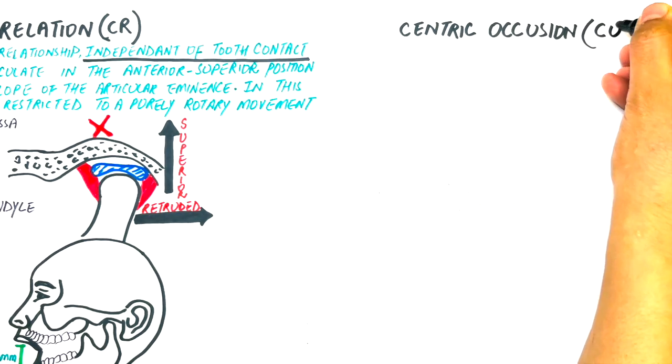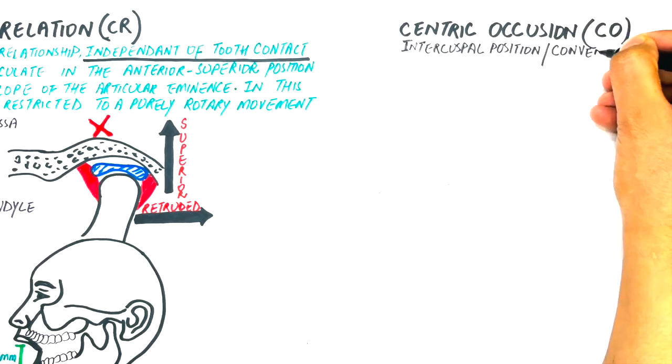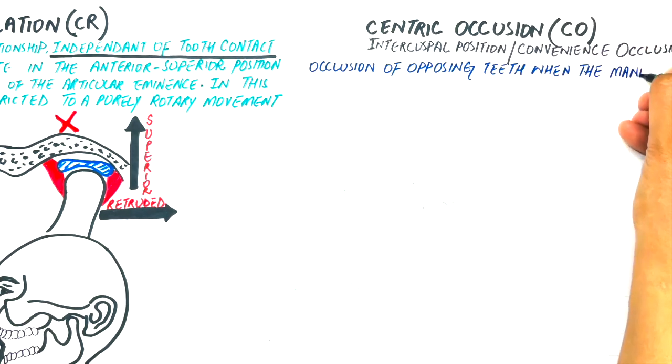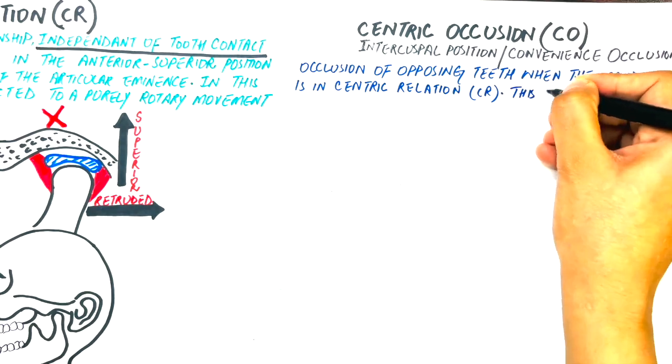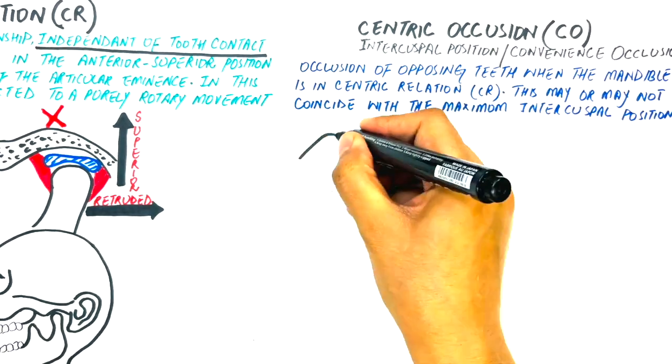On the other hand, centric occlusion, also known as intercuspal position or convenience occlusion, is the occlusion of opposing teeth when the mandible is in centric relation. This may or may not coincide with the maximal intercuspal position.